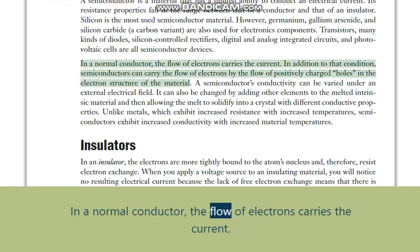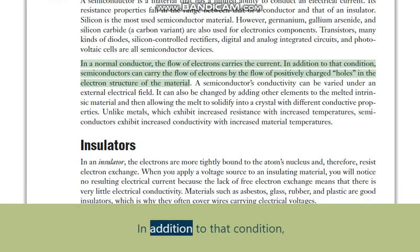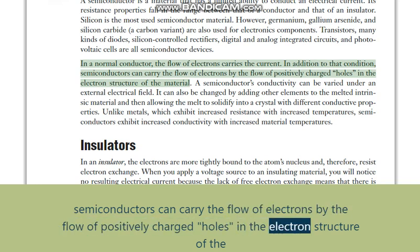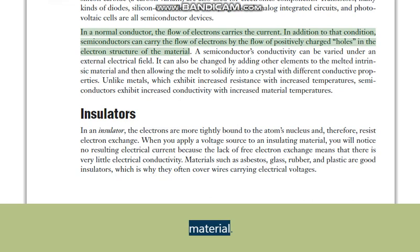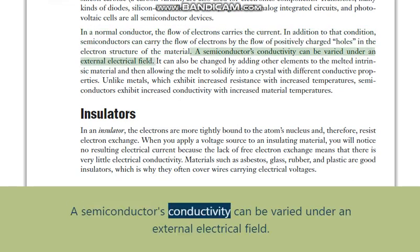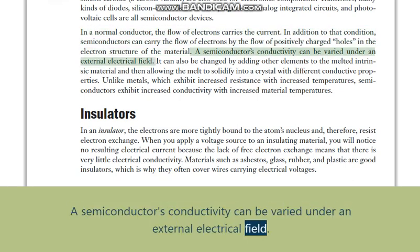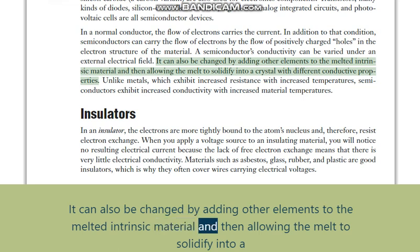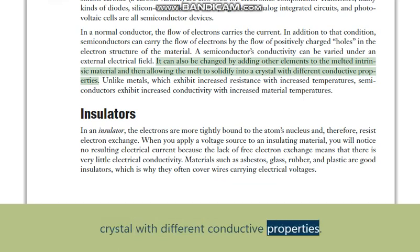In a normal conductor, the flow of electrons carries the current. In addition to that condition, semiconductors can carry the flow of electrons by the flow of positively charged holes in the electron structure of the material. A semiconductor's conductivity can be varied under an external electrical field. It can also be changed by adding other elements to the melted intrinsic material, and then allowing the melt to solidify into a crystal with different conductive properties.